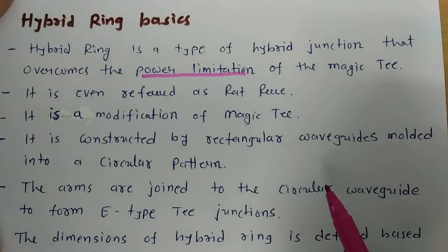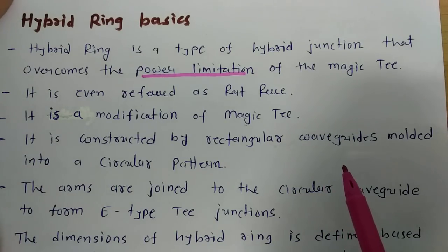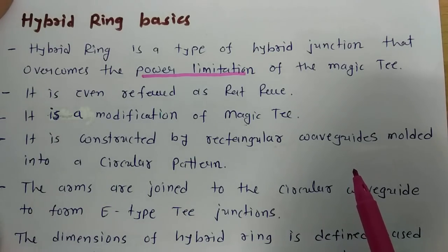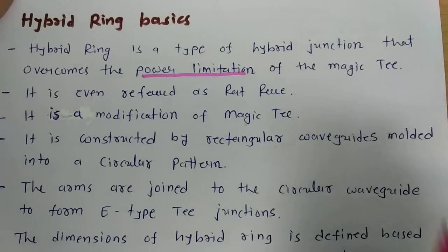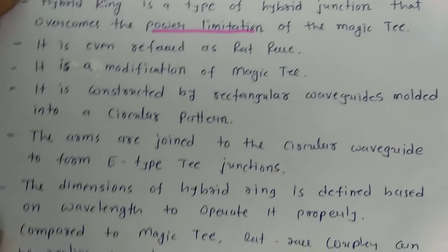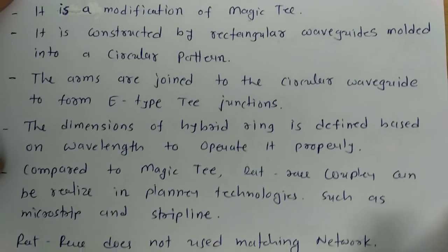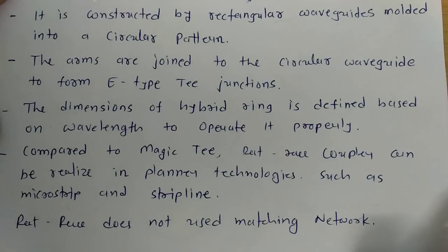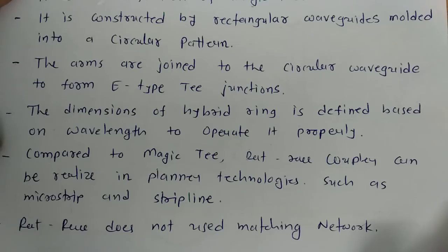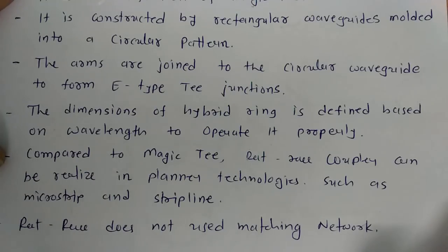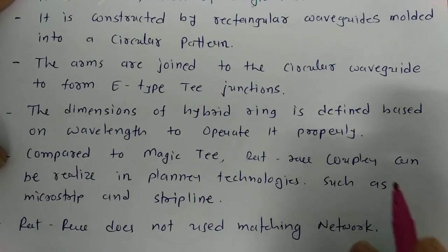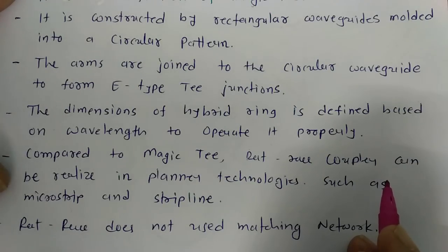The hybrid ring is a modification of the magic T. It is constructed by a rectangular waveguide molded into a circular pattern — that's why it is referred to as a hybrid ring. It is made up of a rectangular waveguide molded into a circular pattern. It has arms with similar junctions as E-plane T junctions, where once we give input at any port,